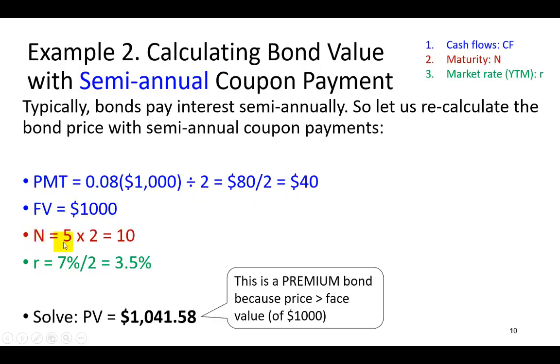The maturity of the bond, which is five years, translates to ten semi-annual periods. Ten six-month periods, that is. And finally, the required rate of return is an annual rate of 7% comes out to be 3.5% per half a year. And that's what we're going to put in. And when we do so, it comes out to be 1,041.